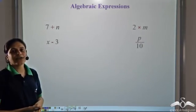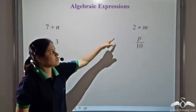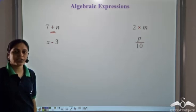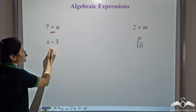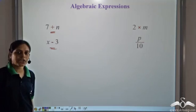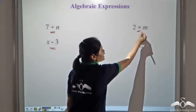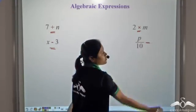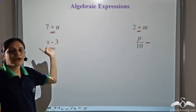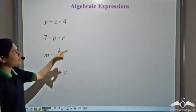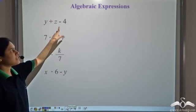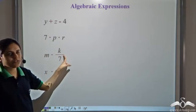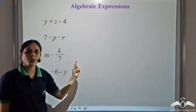We see some more algebraic expressions here. All these expressions contain a single operation: 7 plus n contains addition, x minus 3 has subtraction, 2 into m has multiplication, and p by 10 has division. So all these expressions contain just one operation. The expressions listed over here contain more than one operation — addition, subtraction, multiplication, division.